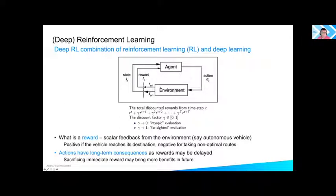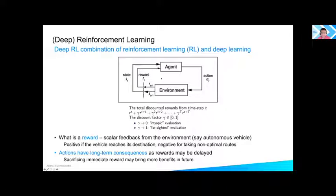A technical primer on reinforcement learning, using an autonomous vehicle as an example: the vehicle is the agent receiving sensory information s(t) from cameras, radars, lidars, or ultrasonics. How the vehicle moves defines an action — moving left or right, pedal pressure, etc. The reward is the vehicle's feedback from the environment: a positive number for reaching its destination, negative for non-optimal routes.